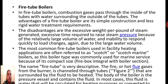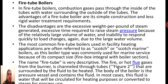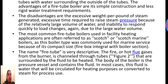In fire tube boilers, the combustion gases are passed through the inside of the tubes while the water surrounds the outside of the tubes. This is very simple in construction and requires less rigid water treatment requirements. The disadvantage is that excessive time is required to raise the steam pressure because of the relatively large volume of water surrounding these tubes, and the inability to respond to quick changes in load. Fire tube boilers are normally called scotch marine boilers because they are used mostly in marine service due to their compact size.